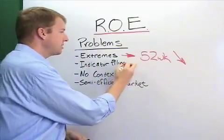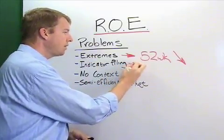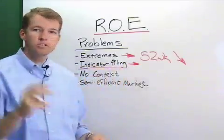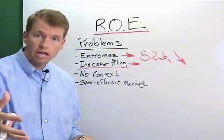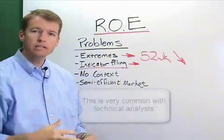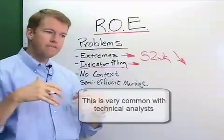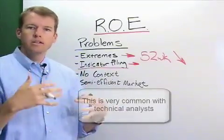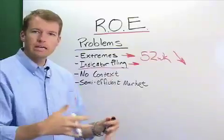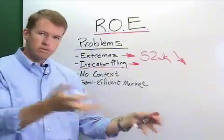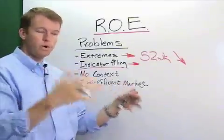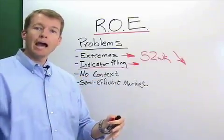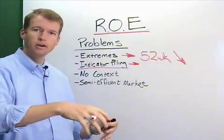So the second pitfall is that traders will oftentimes begin to pile indicators. This happens to fundamental analysts and technical analysts alike. What they'll do is think: if there's a probability of X to find a good trade because it has a good name — whatever the criteria here — then therefore, if I were to add another indicator, I could increase that probability.